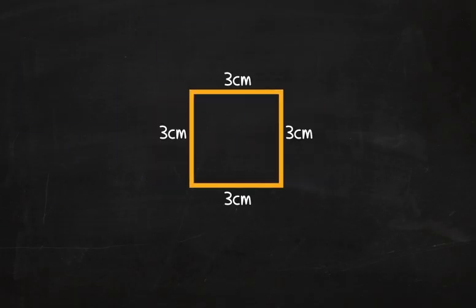So, for this square, you would add the sides 3 plus 3 plus 3 plus 3, which equals 12 centimeters. Or, since all sides of a square are equal, you could just multiply 4 times 3, which equals 12 centimeters.